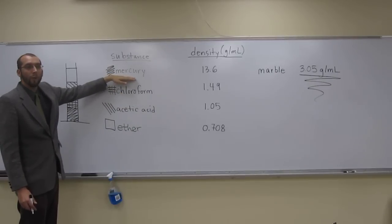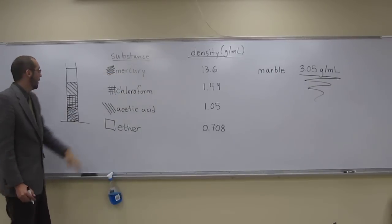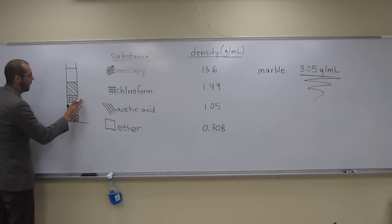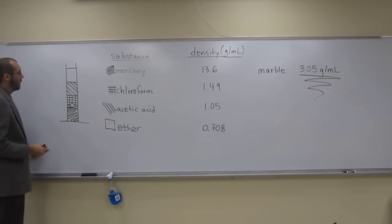Does it have a higher density than mercury? No. So where is the marble going to be found? It's going to be found right there on top of the mercury layer within the chloroform layer, sitting on the mercury.